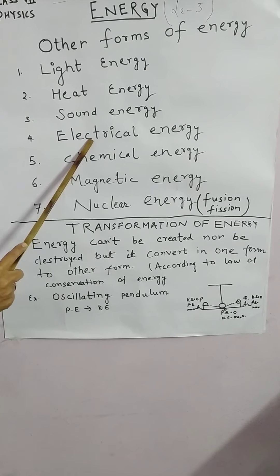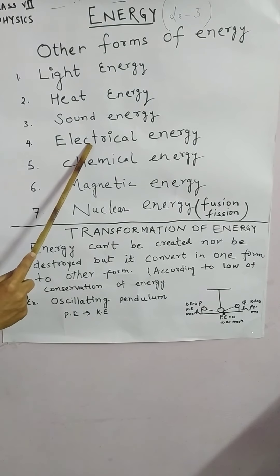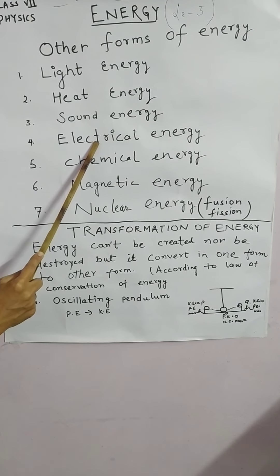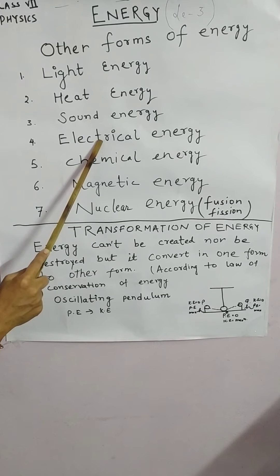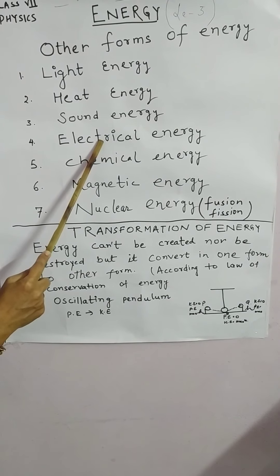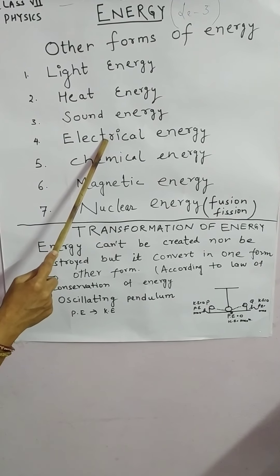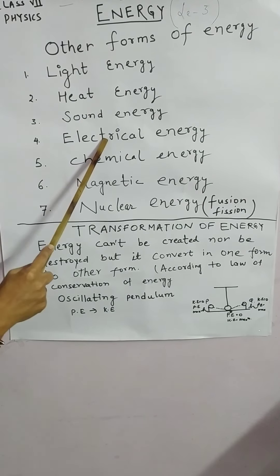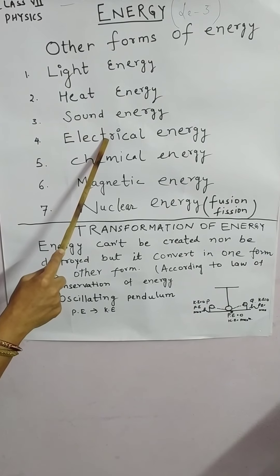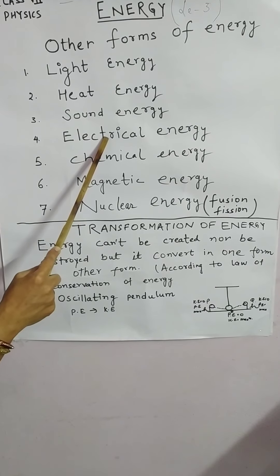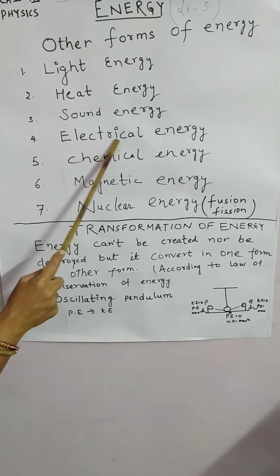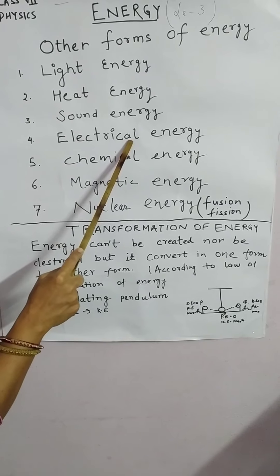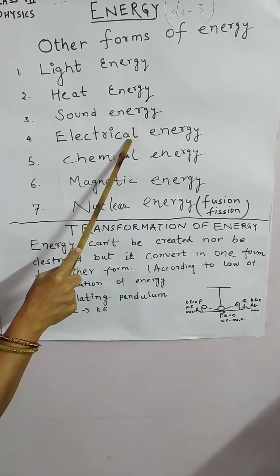Electrical energy. The energy possessed by the motion of charged particles — that means the movement of electrons in a conductor. Example: all our electronic gadgets work on electrical energy.